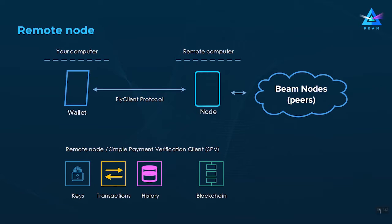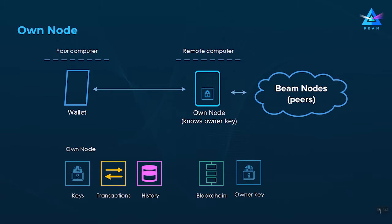What is the difference between connecting to a random remote node versus a specific remote node? The difference lies in something called the owner key. The owner key is a special secret key generated from your seed phrase, and it is used to tag your UTXOs in the blockchain so that you and only you can always recognize your UTXOs when looking at the blocks. It does not allow spending Beam,